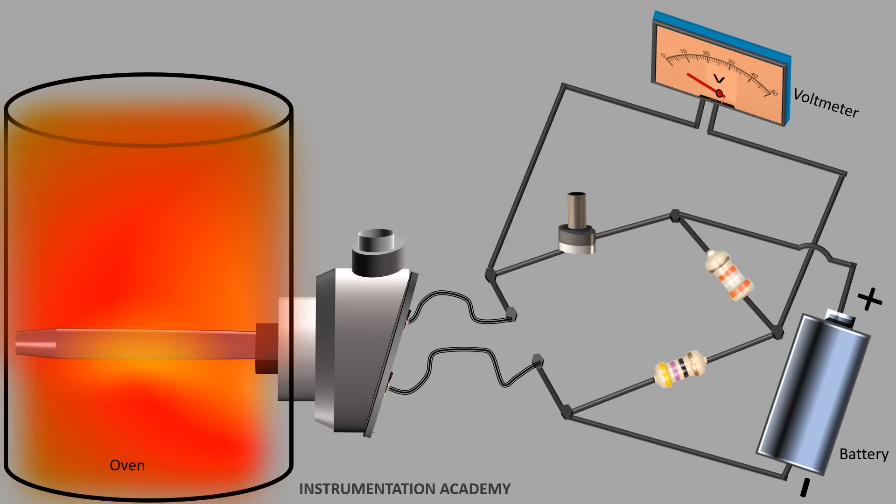Two types of Wheatstone bridge circuit configurations are mainly used. One is null balanced bridge and the other is deflection bridge. In null balanced bridge, the resistors R1 and R2 are known and R3 is an adjustable resistor. The resistor R3 is initially adjusted in order to obtain zero volt in the voltmeter. In this condition, the bridge is said to be null balanced. This would be the zero or set point on the RTD temperature output.